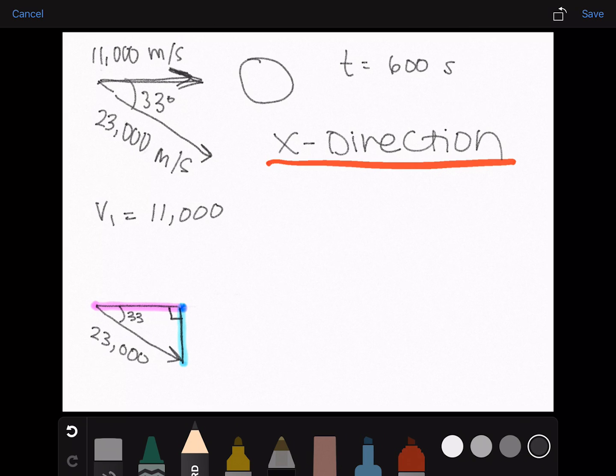So to find the length of this part, we need to use trig. That side is adjacent to the angle, so we can use cosine. Cosine of 33 equals adjacent over hypotenuse.